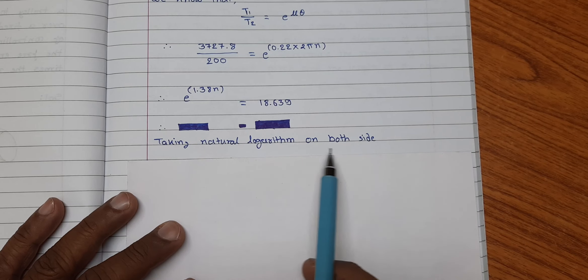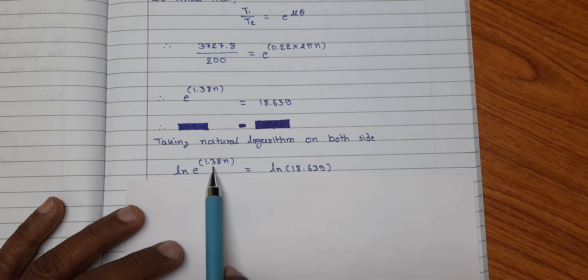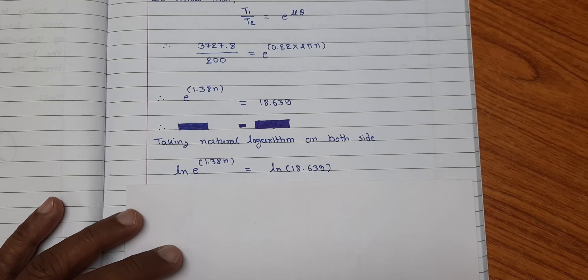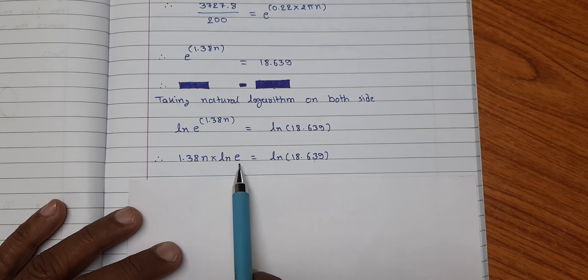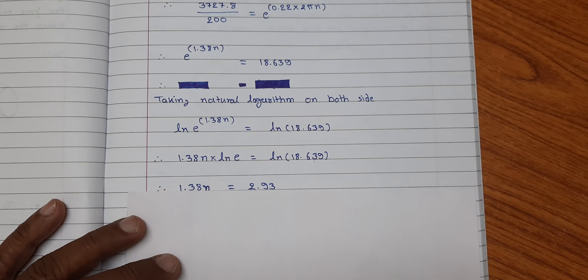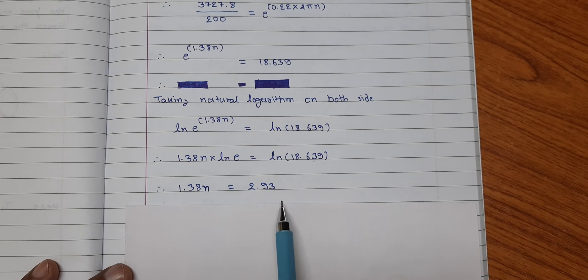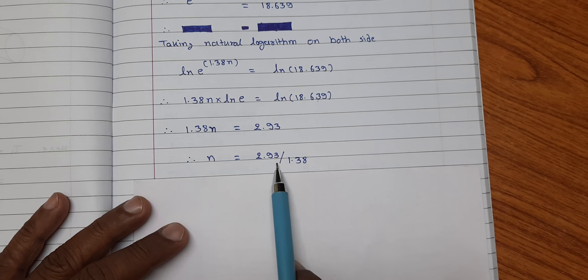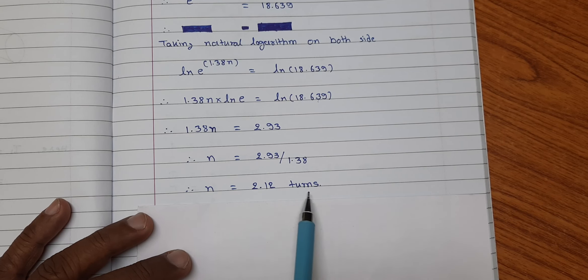Taking natural logarithm on both sides, log of E raise to 1.38 N is equal to log of 18.639. So, that gives 1.38 N into log of E is equal to log of 18.639 and that gives 1.38 N is equal to 2.93. So, N is equal to 2.93 divided by 1.38 and it gives N is equal to 2.12 turns.